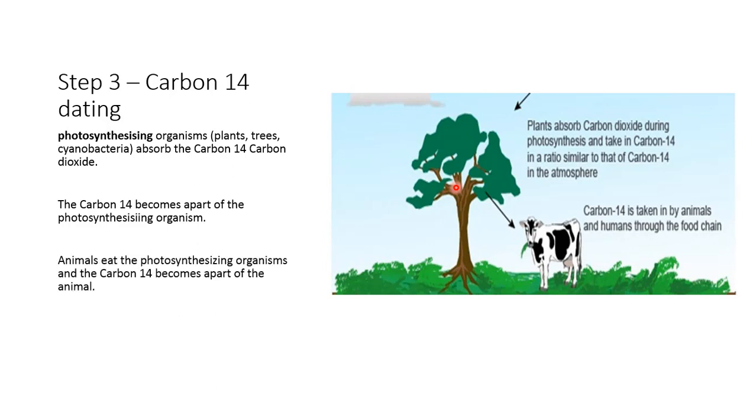Next, so animals eat the photosynthesizing organisms, and carbon-14 becomes a part of the animal. So cows, us, insects eat the organism, and so the carbon-14 then becomes part of them, right? The ratio of carbon-12 to carbon-14 in all animals and all plants and all living things on this planet is the same as the ratio that is in the air.